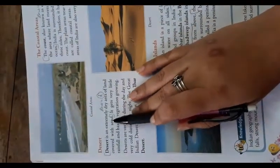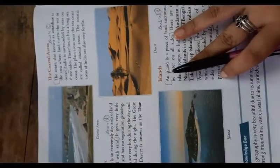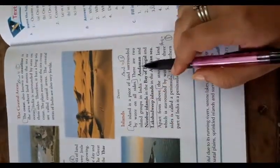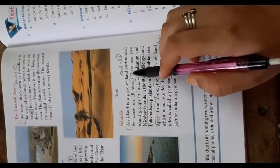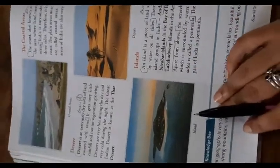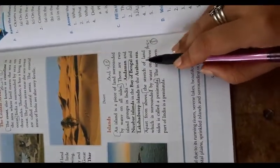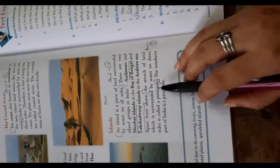Now D: desert is extremely dry area of land covered with sand. E: an island is a piece of land surrounded by the water on all sides. F: the stretch of land which is surrounded by water on three sides is called a peninsula.